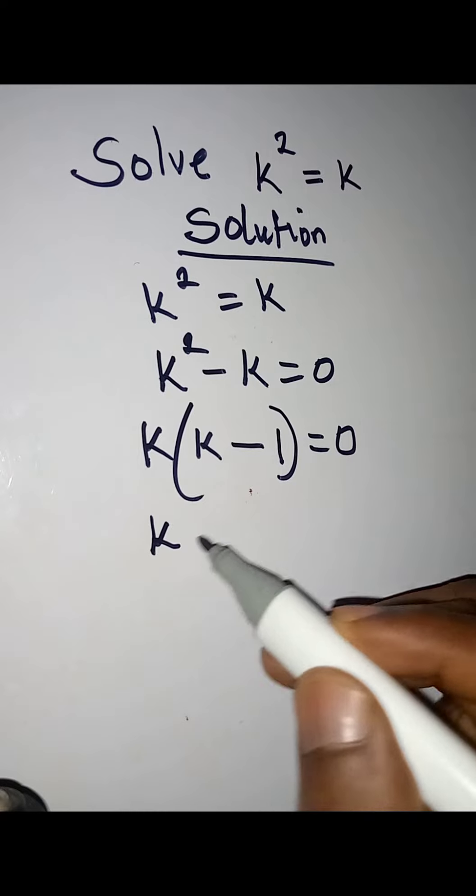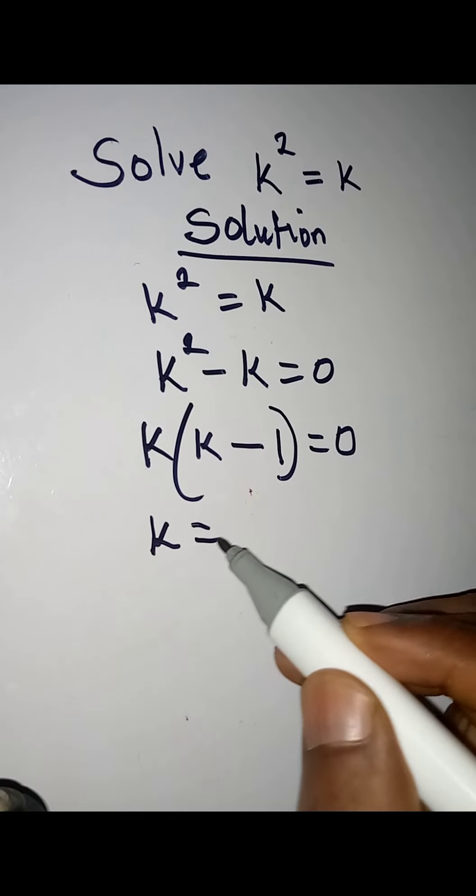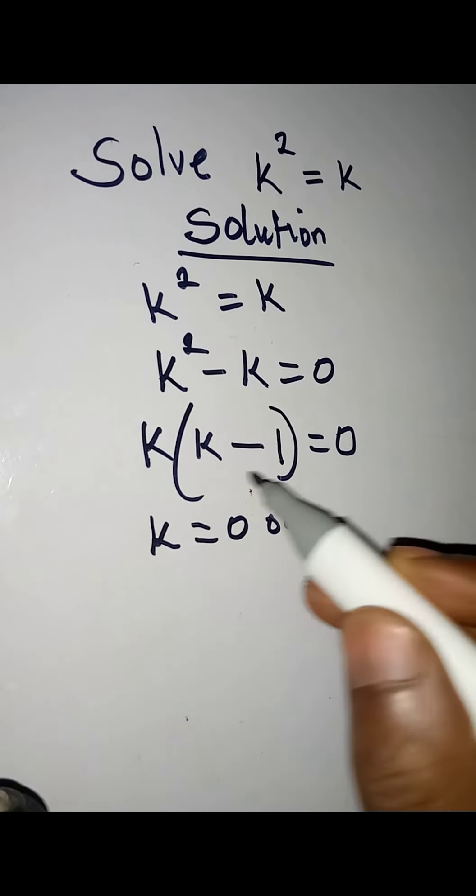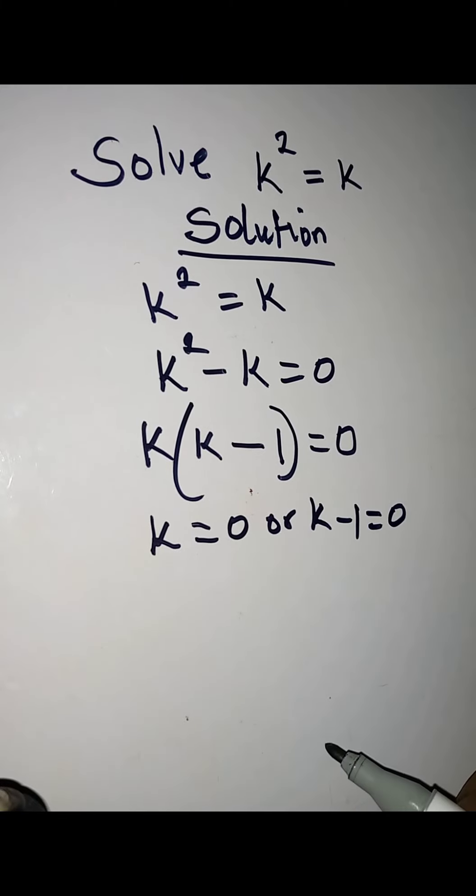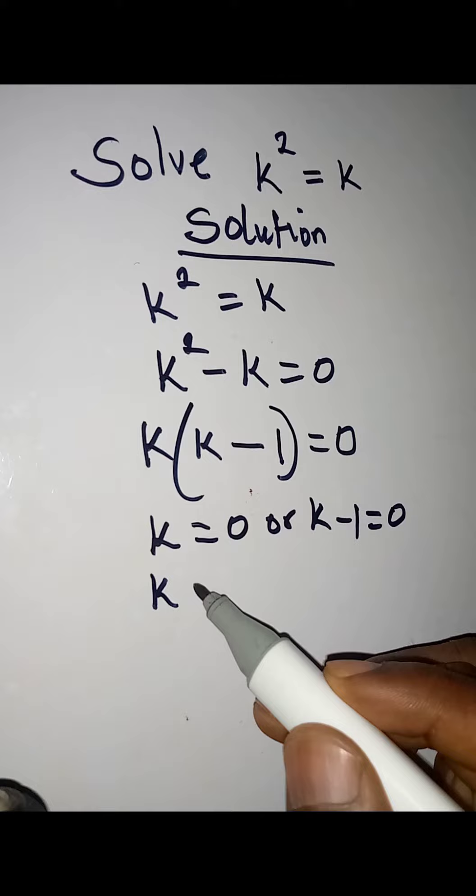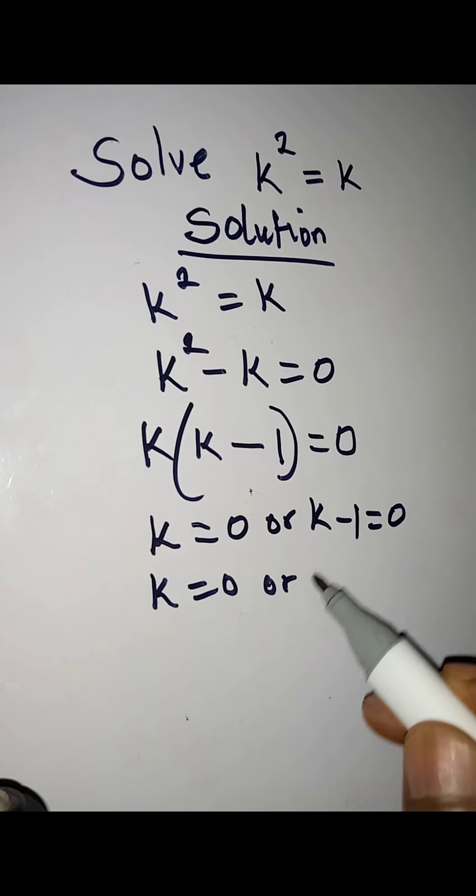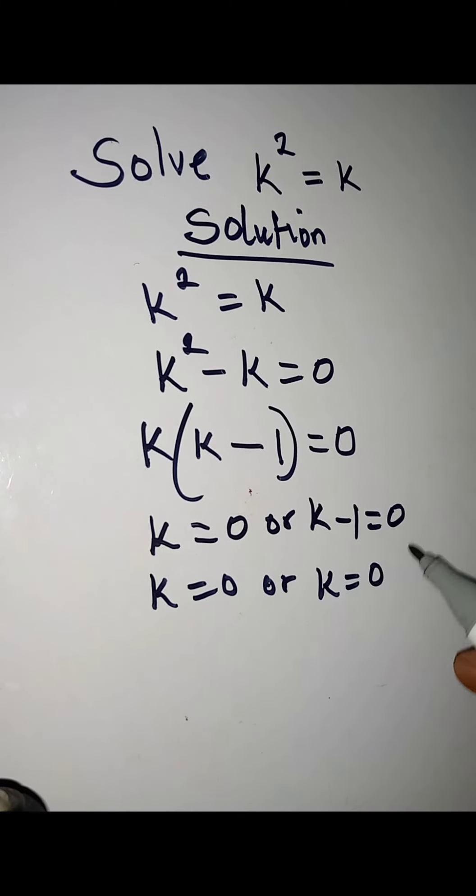We know that either k equals zero or k minus 1 equals zero. From here, k remains zero, or k equals zero plus one because negative one goes to the right to become positive one.